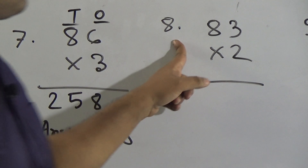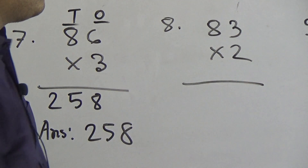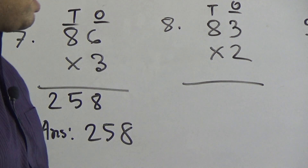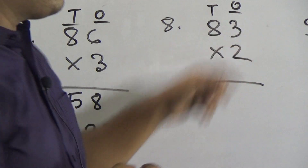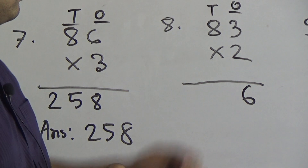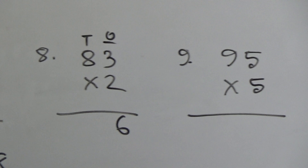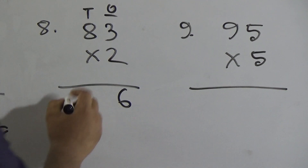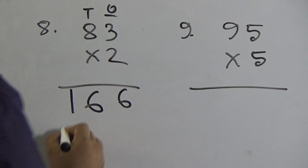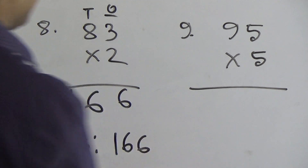Question 8: 83 multiplied by 2. Here 3 is in the ones place and 8 is in the tens place. First we multiply 3 by 2: 2 threes are 6, and there is no carrying. Now we multiply 8 with 2: 2 eights are 16. There is no carrying, so we write 16 here. So the answer to question 8 is 166.